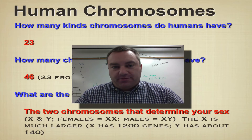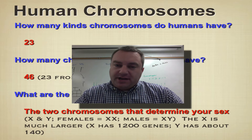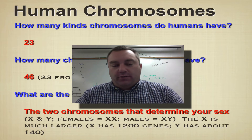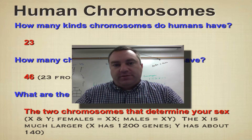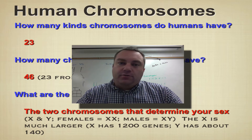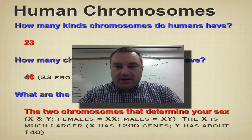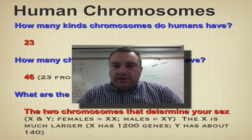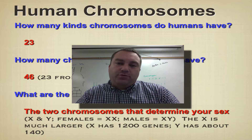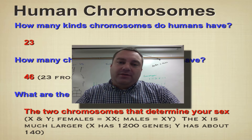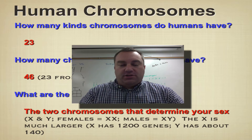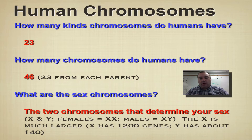Welcome to the first episode from chapter 14. Chapter 14 is on human genetics, and it's really an extension of what we learned in chapter 11, which was about Mendelian genetics, where you learned about dominant, recessive, incomplete dominance, co-dominance, Punnett squares, law of segregation, et cetera. So in this chapter, we're extending that knowledge and applying it to more human stuff. This first episode is going to be about human chromosomes.